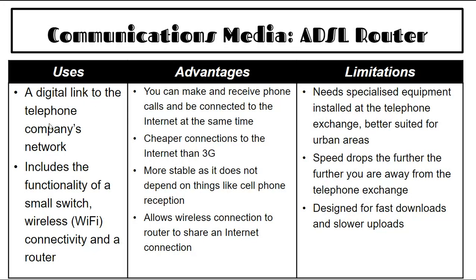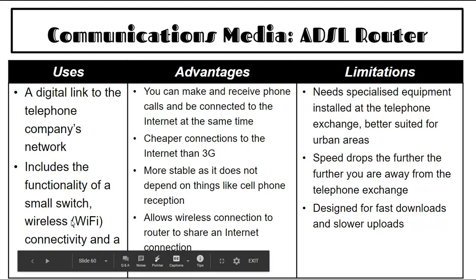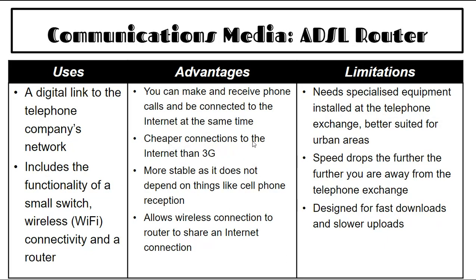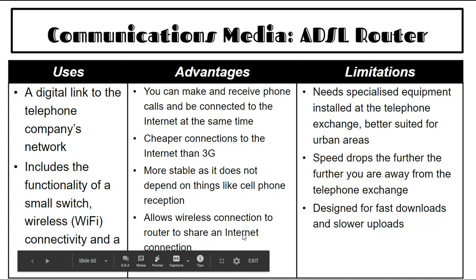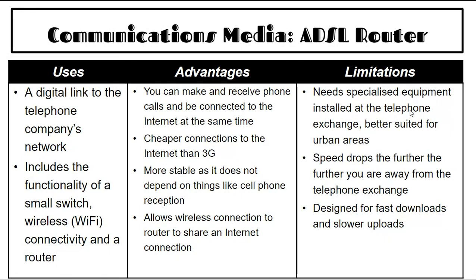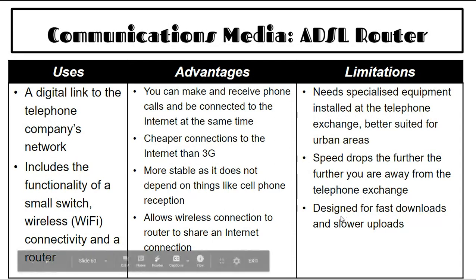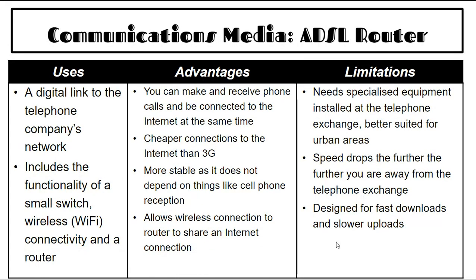ADSL: a digital link to the telephone company's network, includes Wi-Fi functionality, and allows you to make calls and be connected to the internet at the same time. It's cheaper than 3G, more stable, and doesn't need cell reception. You do need specialized equipment and a dedicated telephone line. Speed drops the further you are from a telephone exchange. It's designed for fast downloads and slow uploads. Fiber is the newest option — prices have come down significantly, it's probably the fastest, and can also use Wi-Fi.